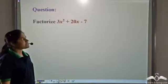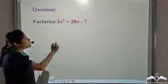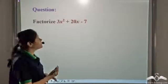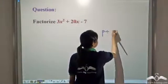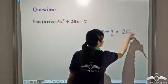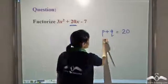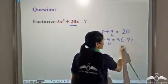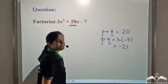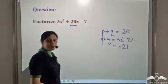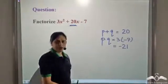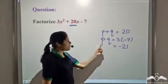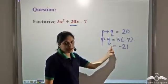Now let us factorize 3x² + 20x − 7. We need to find two numbers P and Q such that P + Q = 20, which is the coefficient of the middle term, and P × Q = 3 × (−7) = −21. Since the product is negative, one number must be positive and the other negative.